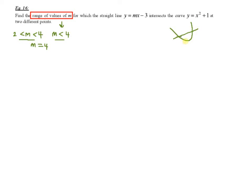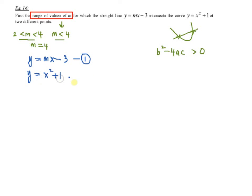Since the line intersects the curve at two different points, you know that b squared minus 4ac is greater than 0. First, list down the straight line y equals mx minus 3 as equation one, and the curve y equals x squared plus 1 as equation two. Next, eliminate y by substituting y equals mx minus 3 into equation two.